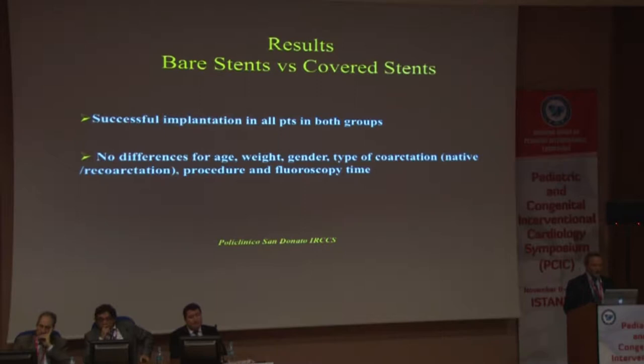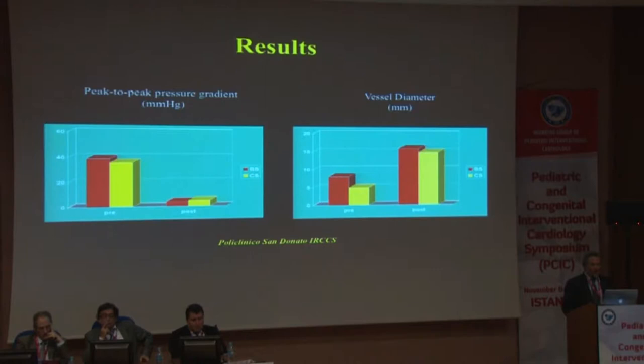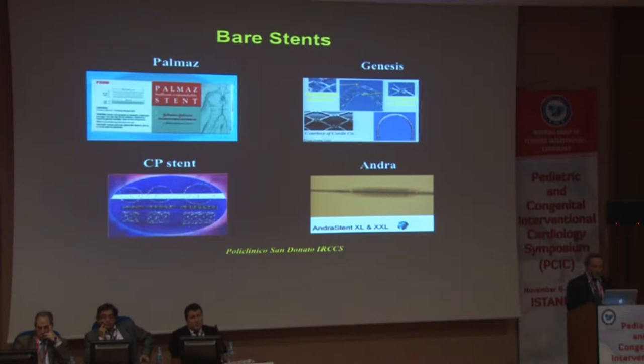The implantation of the stent was successful in both groups, with no difference for age, weight, etc. However, the type of coarctation was different because in the cover stent group we treated much more complex cases. In both groups, with bare metal stents and cover stents, we achieved good hemodynamic results in terms of reduction of peak-to-peak pressure gradient immediately in the lab and increasing vessel diameter.